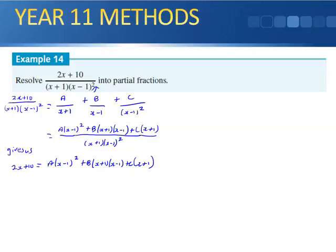Substituting x = 1: 2(1) + 10 = 12; the A and B terms vanish (giving 0), and C(1 + 1) = 2C, so C = 6. Now substituting x = -1: 2(-1) + 10 = 8; (-1 - 1)² = 4, giving 4A, and the B and C terms vanish. So A = 2.